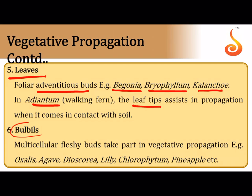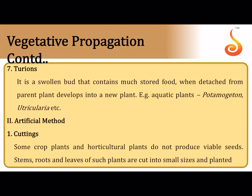Bulbils are buds that develop into structures helping in vegetative propagation, as in Oxalis, Agave, Dioscorea, etc. Turion is also a bud seen only in aquatic plants like Potamogeton and Utricularia or bladderwort, usually found at the axil of the main axis and branch.